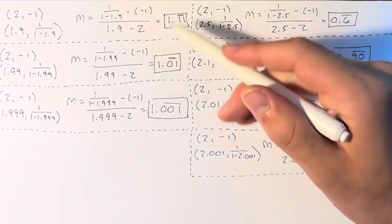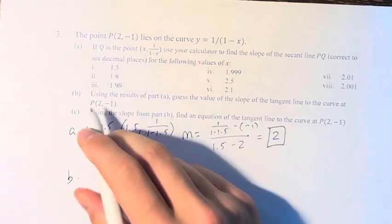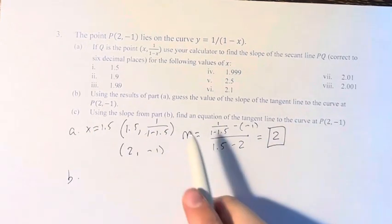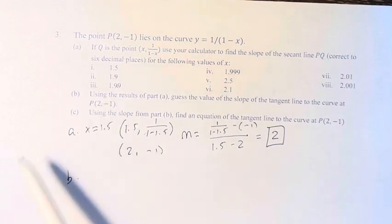But what's important is that they're approaching 1. Because we're asked in part B, using the results of part A, guess the value of the slope of the tangent line to the curve at P(2, -1).